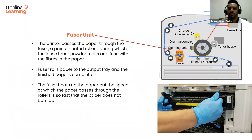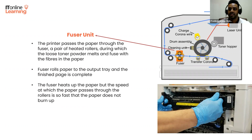So what keeps the paper from burning up? Mainly its speed — the paper passes through the roller so quickly that it doesn't get very hot.